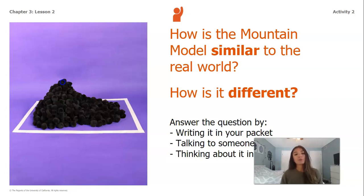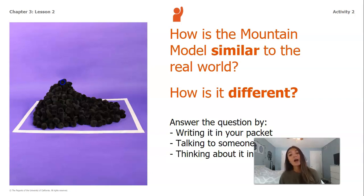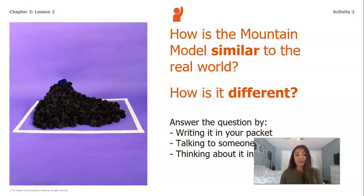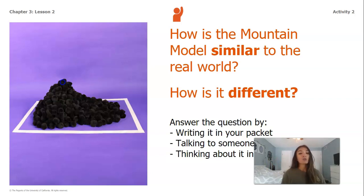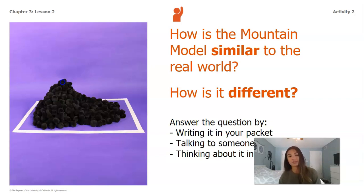Some differences are that our model is made out of soft cotton balls, whereas a mountain is much harder because it's made out of rock. Another difference is that we're using our hands to take the pom-poms off of our models, whereas when erosion happens on a mountain, it's normally caused by something else like weather — it would not happen just from somebody taking a tiny rock off of a mountain.